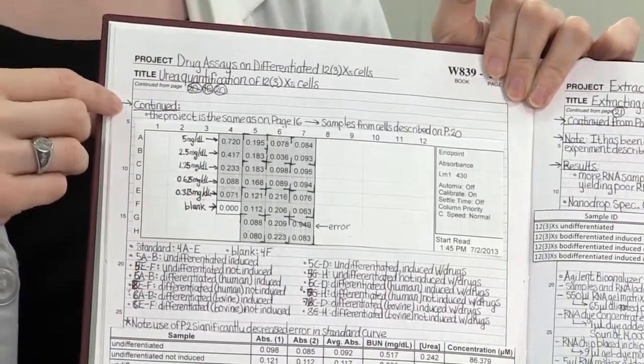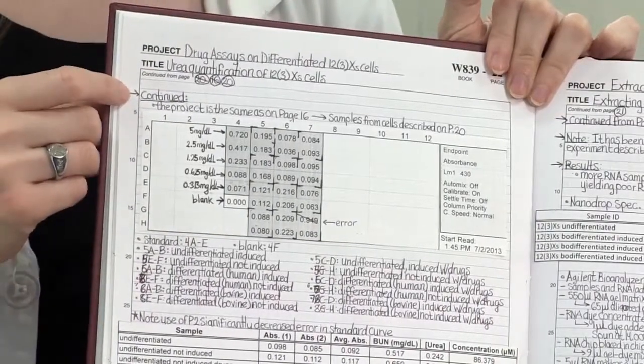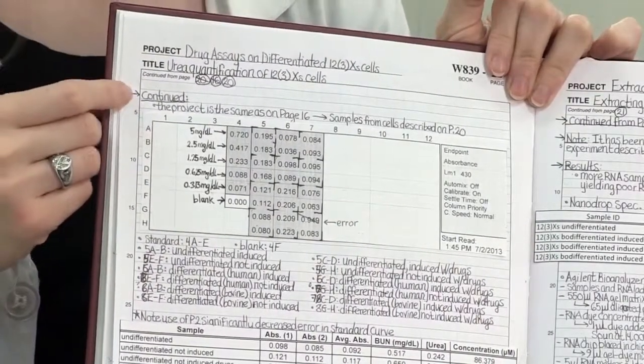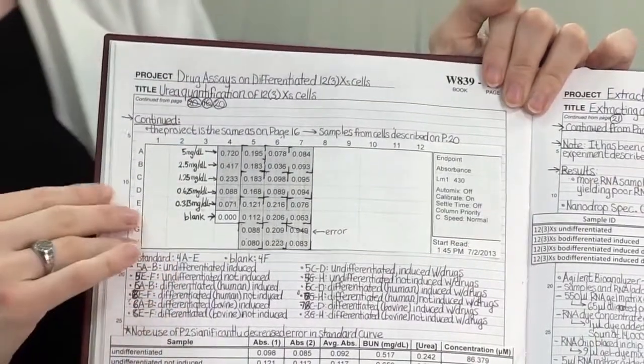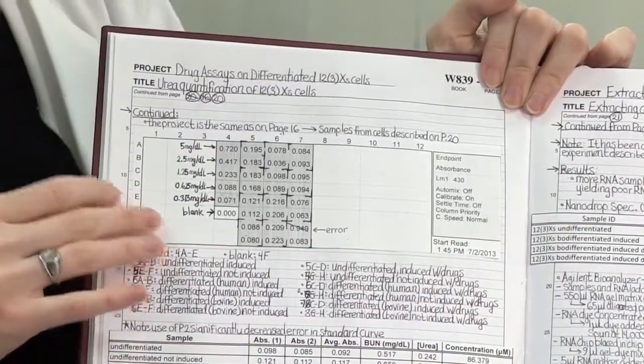It's also really important to write a quick sentence about why you're doing this experiment, what your objective is. That helps keep your eye on the prize and helps you remember why you're doing it.